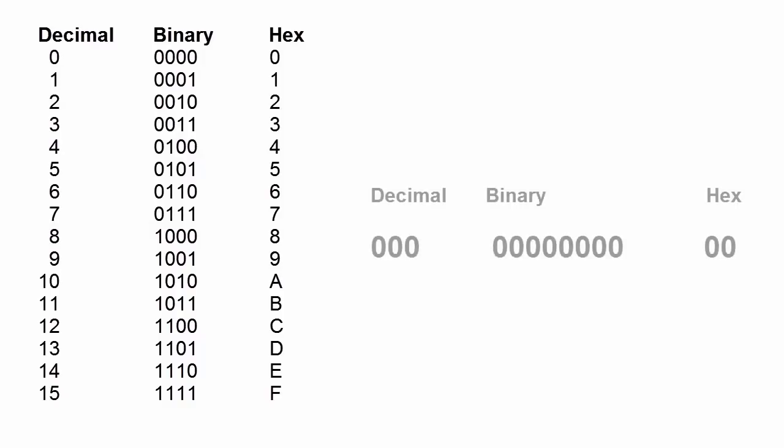Computers tend to deal with numbers in sets of 8 binary digits, or bits. 8 bits is called a byte. A hexadecimal digit can cover just 4 bits, so we need 2 of these digits to represent a byte. Here are some examples.